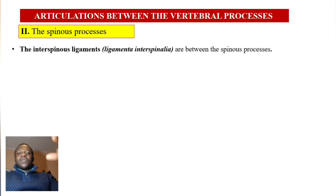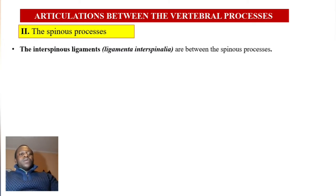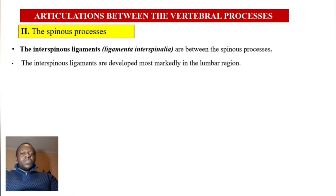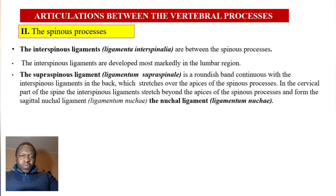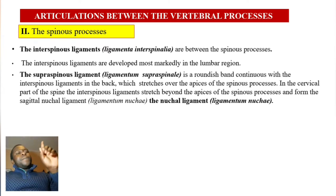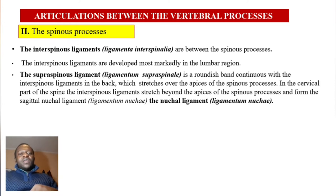Next, the spinous processes. Between the spinous processes you have interspinous ligaments, ligamenta interspinalia. These are found between the spinous processes, and they are developed most markedly in the lumbar region.